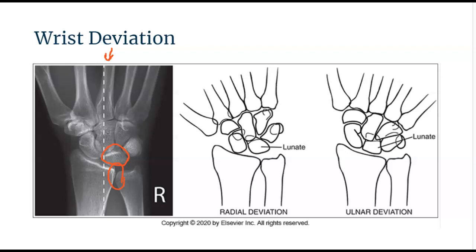With radial deviation, the third metacarpal points toward the medial side of the wrist and situates the lunate medially, so it is more distal to the radius and ulna, and demonstrates increased scaphoid foreshortening. With ulnar deviation, the third metacarpal points toward the lateral side of the wrist and situates the lunate laterally, so it is more distal to the radius.